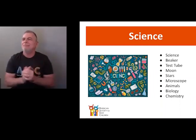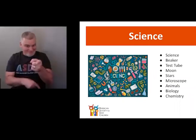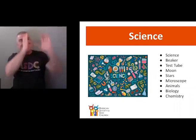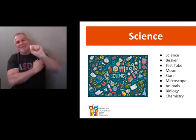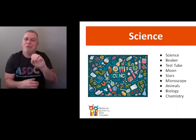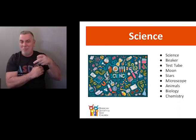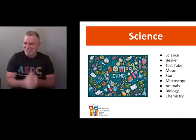Question: is there a difference between the sign for telescope and microscope? Yes — telescope is done like this with larger handshapes pointing upward, and microscope is pointed down with a smaller handshape. So telescope points up and microscope points down. Good question.